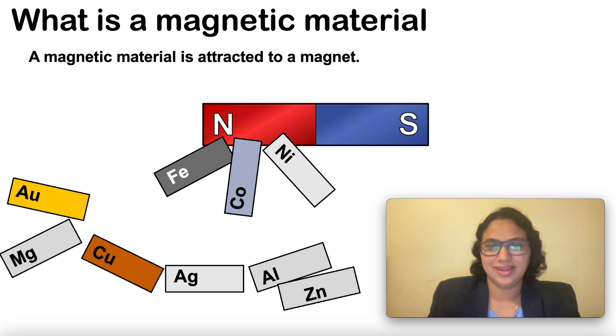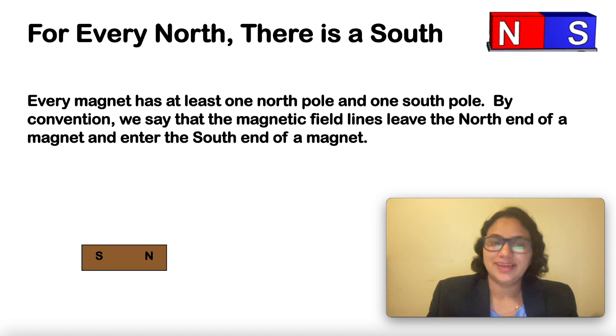You know that every magnet has at least one north pole and one south pole. By convention, we say that the magnetic field lines leave the north end of a magnet and enter the south end of a magnet.